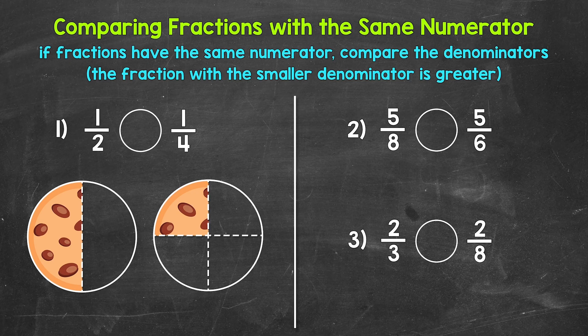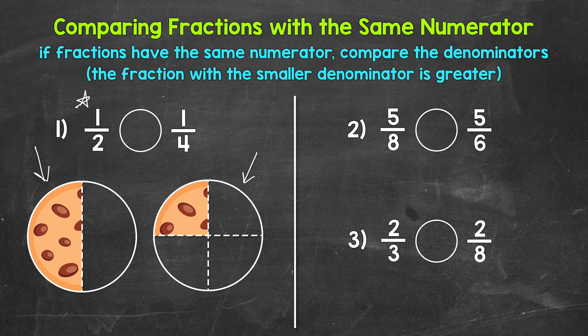Looking at number one, we have two big chocolate chip cookies here to help us out. Both cookies were the same size to start. We are looking at what fraction of each cookie is left. The cookie on the left was divided into two equal parts — one out of two parts is left, so our fraction is one half. The cookie on the right was divided into four equal parts — one out of four parts is left, so our fraction is one fourth. Just by looking at the cookies, we can see that one half is greater than one fourth. There is more of the cookie left for one half than there is for one fourth.